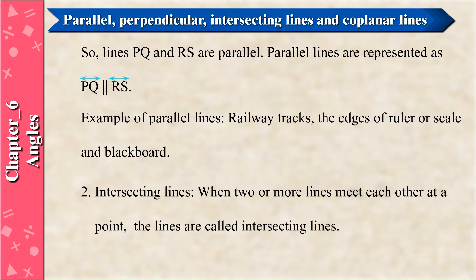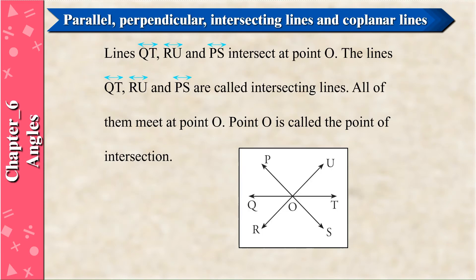Intersecting Lines: When two or more lines meet each other at a point, the lines are called intersecting lines. Lines QT, RU, and PS intersect at point O. The lines QT, RU, and PS are called intersecting lines; all of them meet at point O. Point O is called the point of intersection.